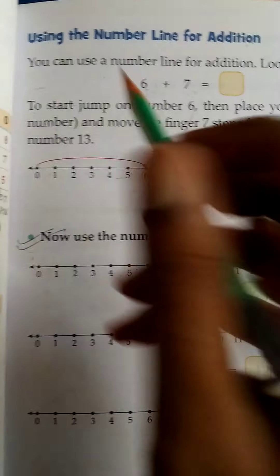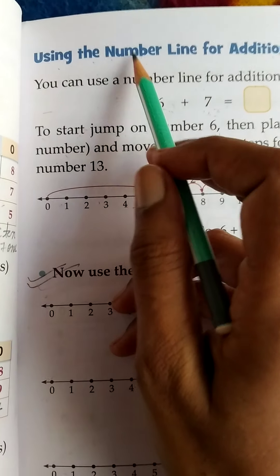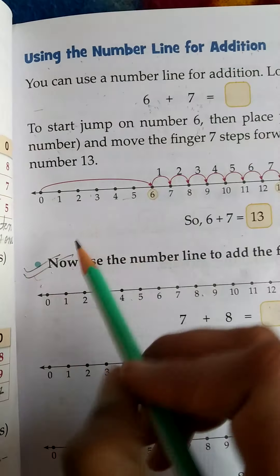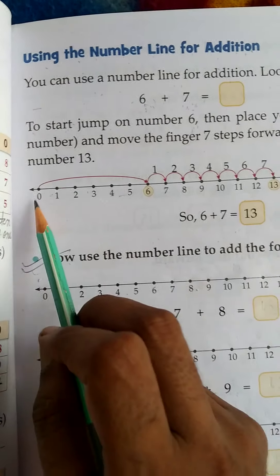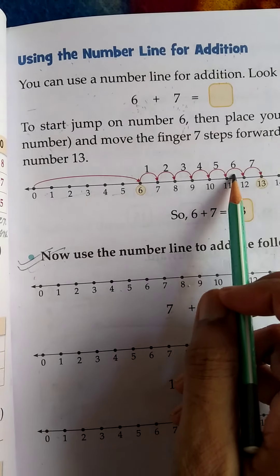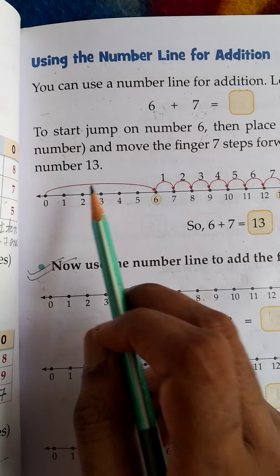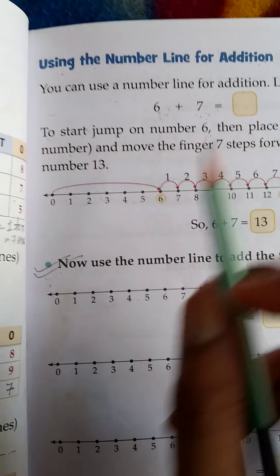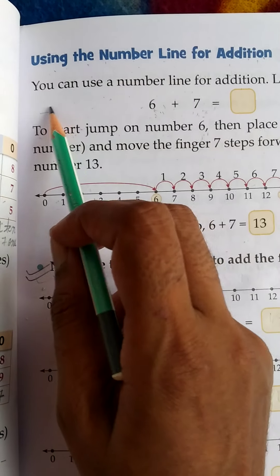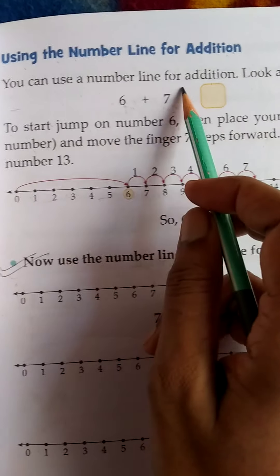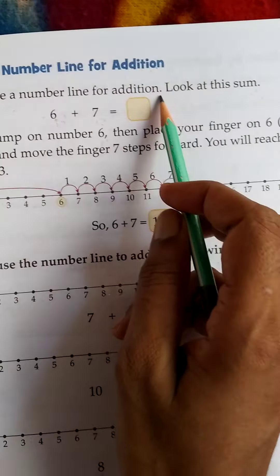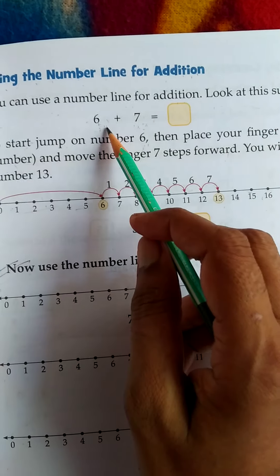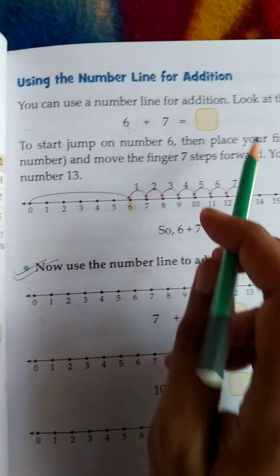Page number 57 is based on using the number line for addition. In this question you have a number line, and you will use it to solve the addition problem. You can use a number line for addition. Look at this sum — 'sum' means addition problem.